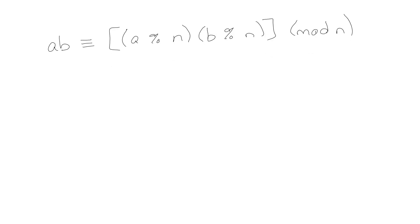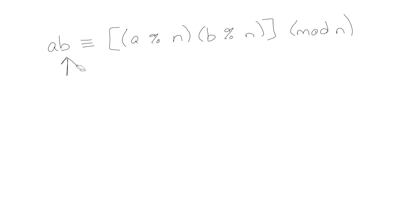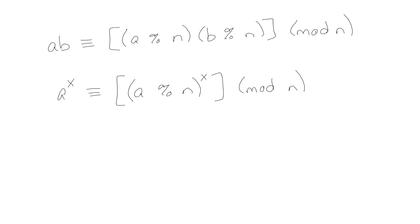Different ways to write this: instead of having these be A's, if they were B's — well, instead of this being a B, if this was an A — the idea is I could just keep putting in more and more of them, like mod A, mod A, mod A. If I did that then I would basically have A to the X is congruent to A mod N, all to the X, and then mod N.